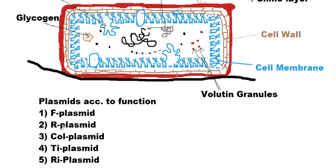Next is the R plasmid — R stands for resistance plasmid. This plasmid is thought to have genes which code for the capsule layer. As discussed in the previous video, the capsule layer gives bacteria protection: if a WBC engulfs a bacterium having a capsule layer, the lysosomal enzymes cannot degrade it, so the bacterium is expelled from the cell in a whole condition. The R plasmid is also believed to give resistance to antibiotics.